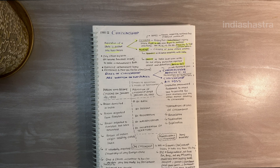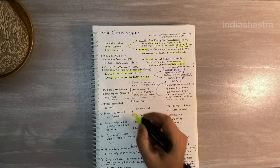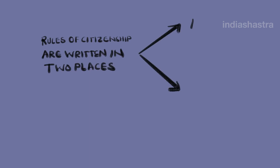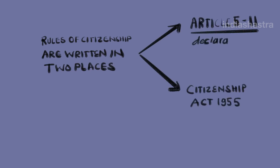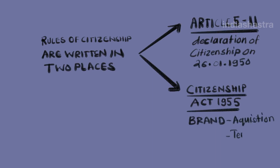Rules of citizenship are written in two places. First, Part 2 of the Constitution of India, that is Article 5 to 11, and second, the Citizenship Act of 1955. Article 5 to 11 is a declaration of citizenship on 26th January 1950 — it deals with persons who became citizens on the day of the commencement of the constitution. The Citizenship Act of 1955 deals with acquisition and termination of citizenship, since it was not mentioned in the original constitution.